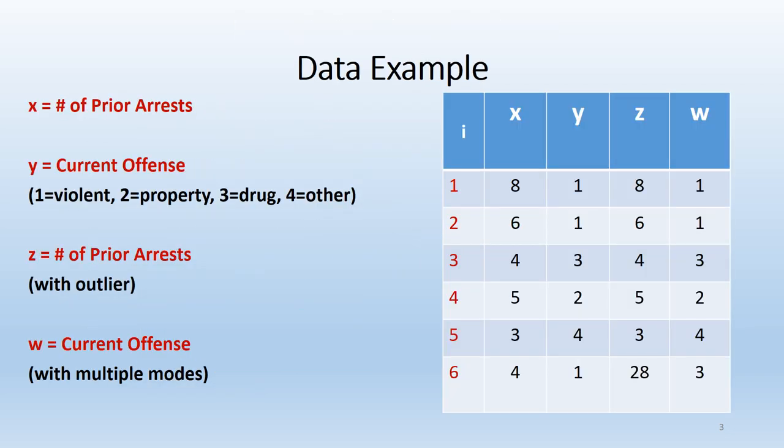We recognize this data set from our prior lecture. We're going to use the same data to illustrate variability and dispersion, just as we did with measures of central tendency. The data set has four variables: variable X is number of prior arrests, at the interval or ratio level of measurement; variable Y is current offense, at the nominal level; and variables Z and W are similar to X and Y with some unique twists.